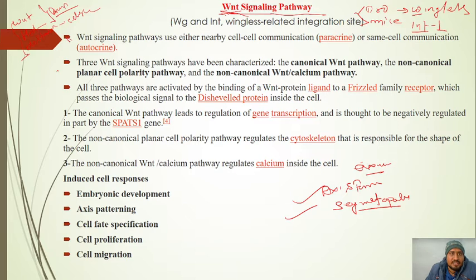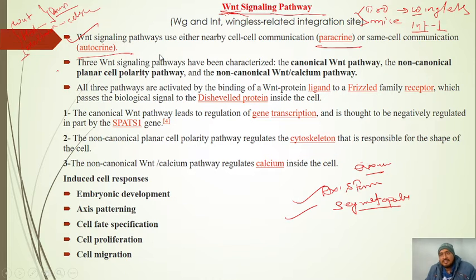The WNT signalling pathway uses cell communication either through paracrine or autocrine signalling. In both ways, we are doing signalling.